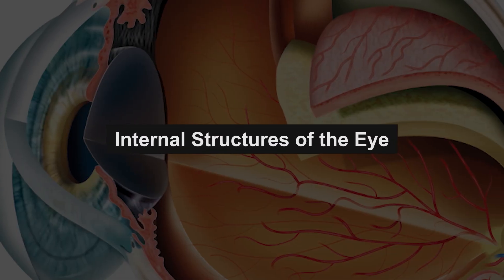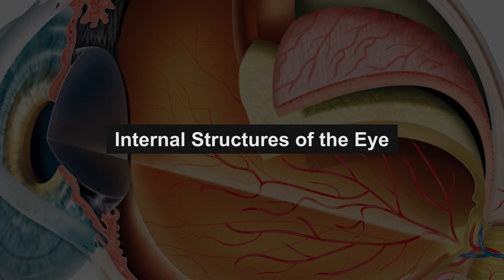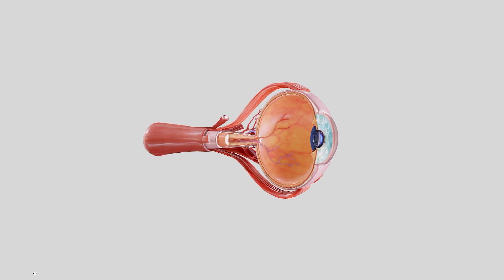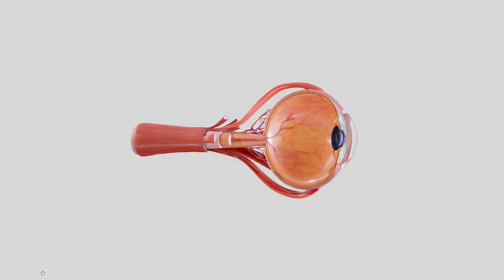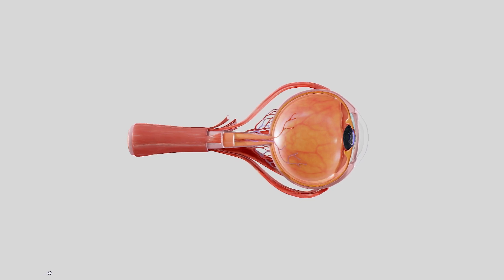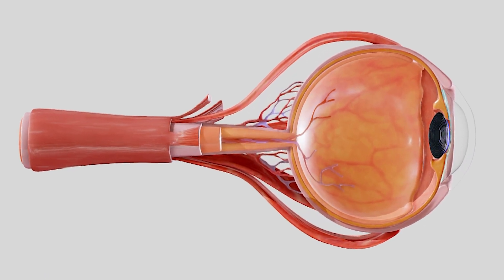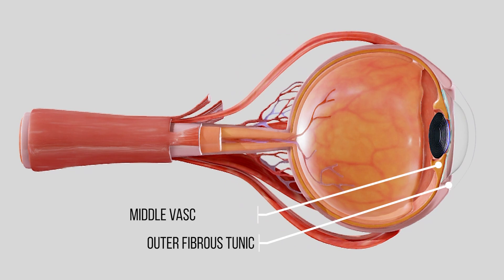Inside the eye, three primary layers form a complex system that transforms light into electrical signals. These layers are arranged concentrically and include the outer fibrous tunic, the middle vascular tunic, and the inner nervous tunic.